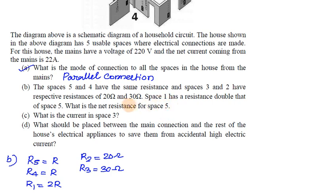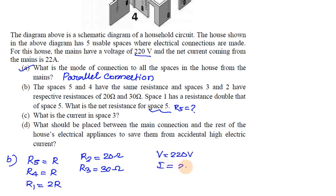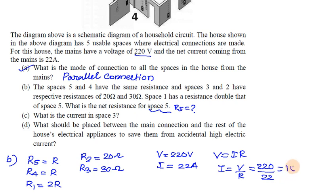What is the net resistance for space 5, R5? Since this is a parallel connection, the total voltage is the same — 220 volts — and the total current is 22 amperes. Using V = IR, we get I = V divided by R, so 220 divided by 22 equals 10 ohms total resistance.